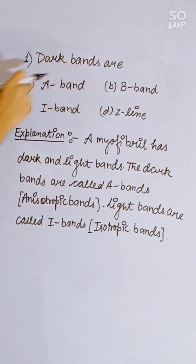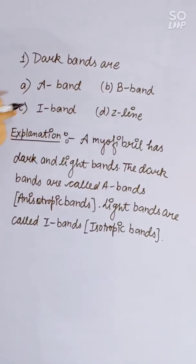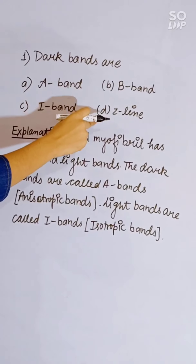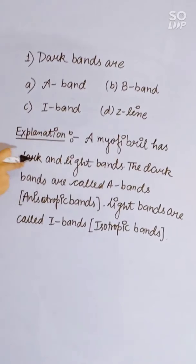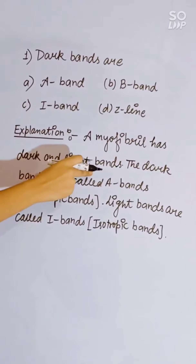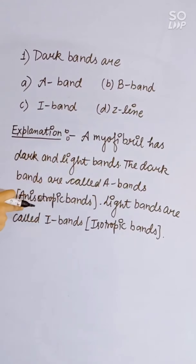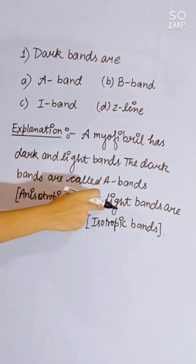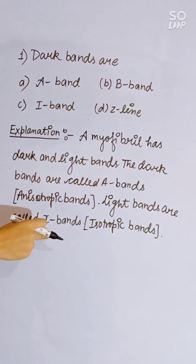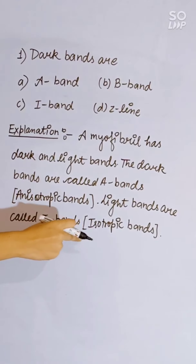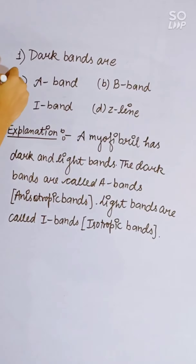Dark bands are: A band, B band, I band, or Z line. A myofibril has dark and light bands. The dark bands are called A bands (anisotropic), and the light bands are called I bands (isotropic). Correct answer is A.